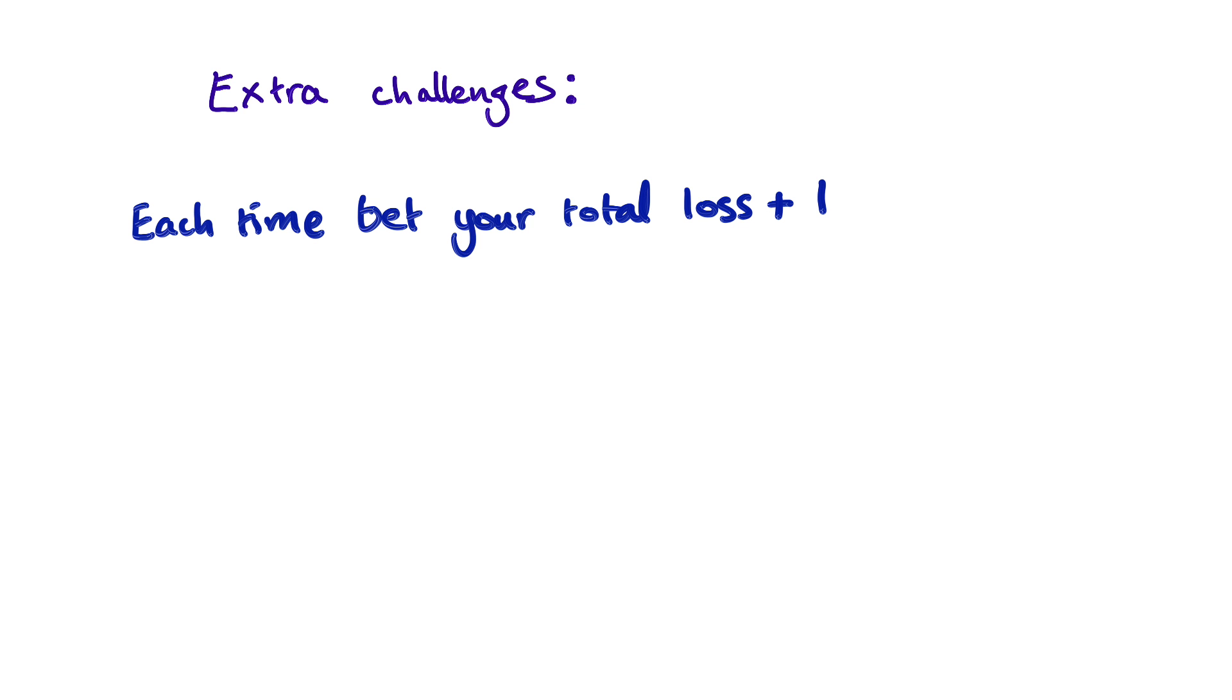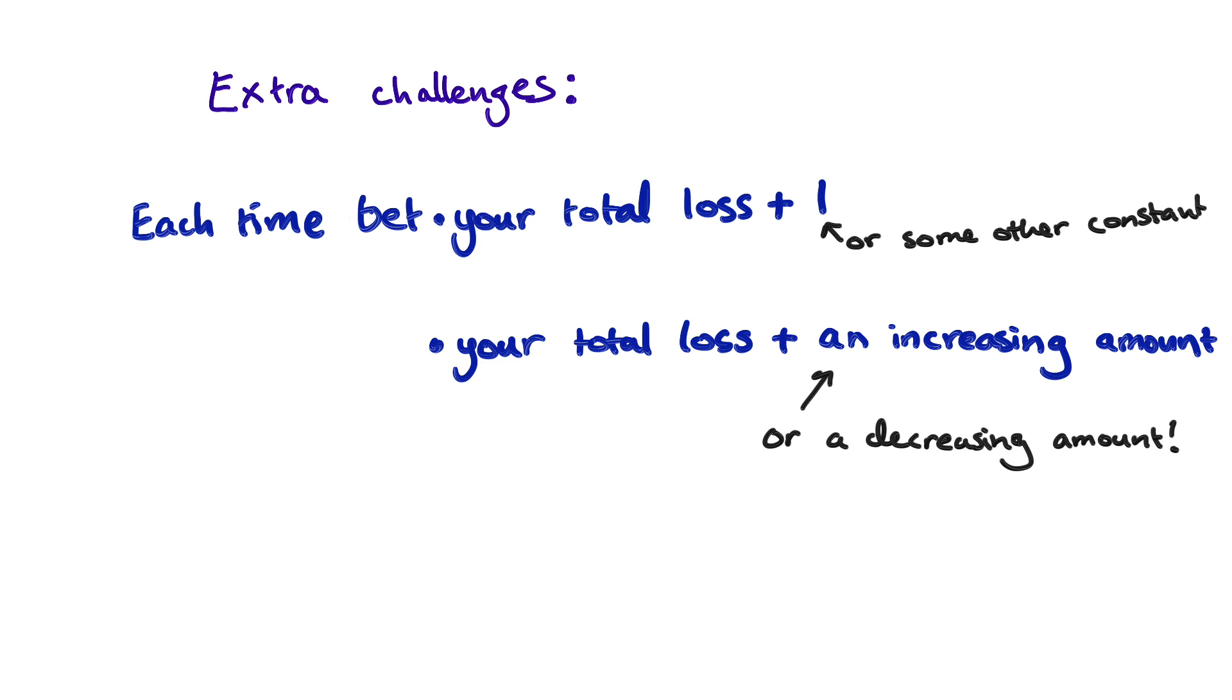And if you do figure it out, here are some other variations that you might want to try. What if you decide not to be too greedy and you only bet your total losses plus 1 each time, instead of 2, or what if you get super greedy and you bet your losses plus some growing amount? In these two scenarios, see how quickly the amount of money you bet grows and what you expect your winnings to be.